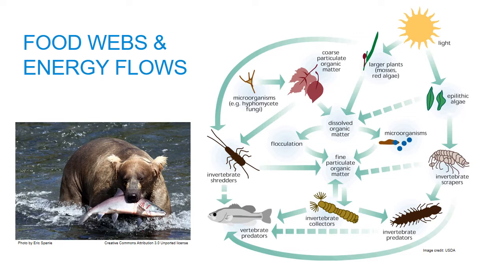The diverse biota composing freshwater ecosystems are continually interacting with each other in complex food webs and competing for needed habitats and other resources. The details of these biotic interactions and the species involved change from season to season and year to year, but the basic processes remain the same. Biota are not only interacting with each other—they're also interacting with the changing physical components of freshwater ecosystems.